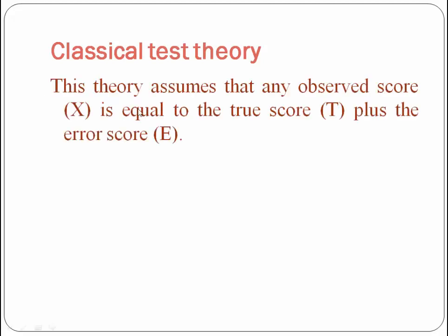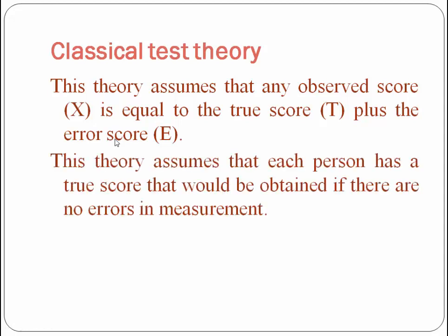This theory assumes that any observed score is equal to true score plus the error score. This theory also assumes that each person has a true score that would be obtained if there are no errors in measurement — meaning any individual's true score exists when there are no errors in the score.